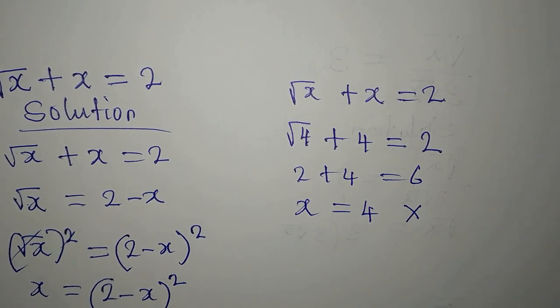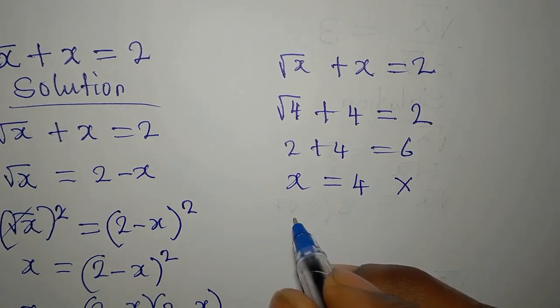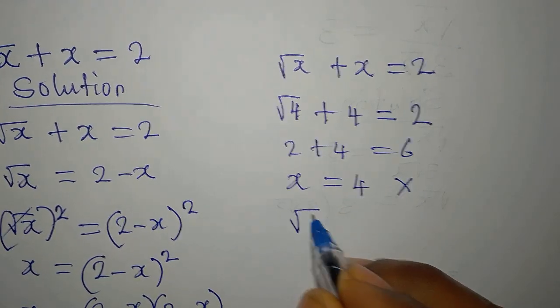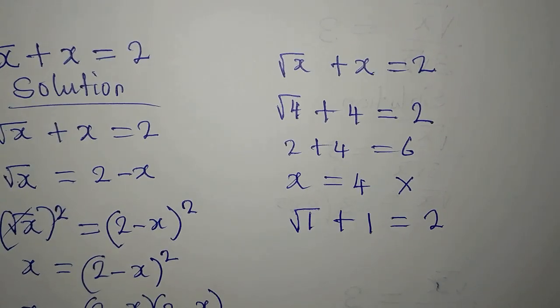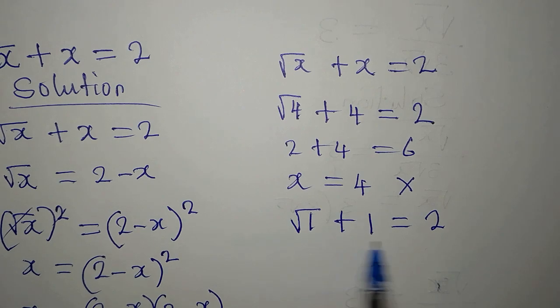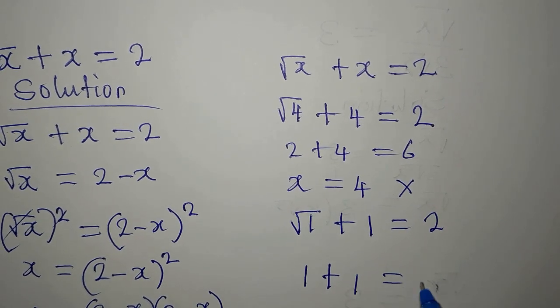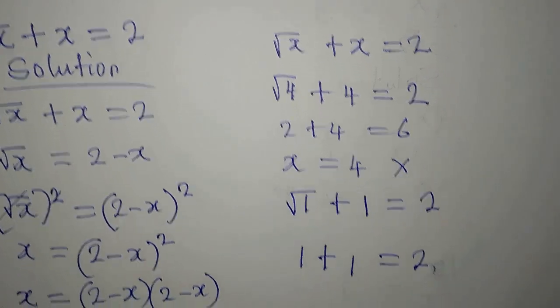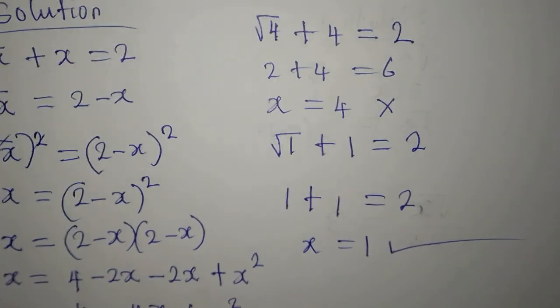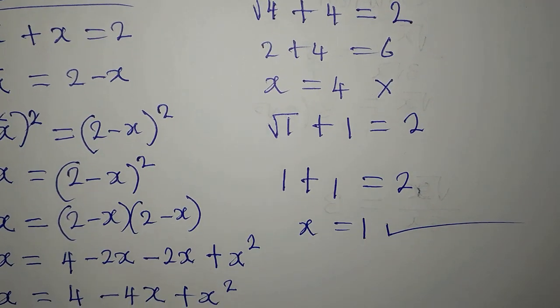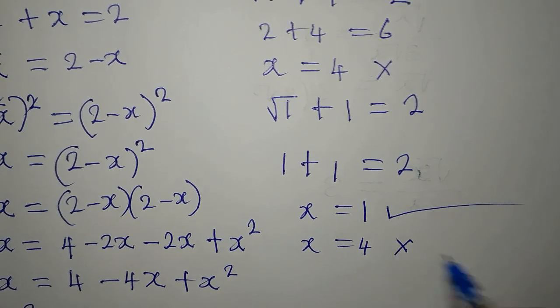Because it is not the solution. Now let's work with the next value, which is x equals 1. So that means we have square root of 1 plus 1. Will this give us 2? The answer is yes, because it is already obvious. Square root of 1 is 1, plus 1, and that is giving us 2. So this means that x equals 1 satisfies the equation, and the first solution, which is x equals 4, does not satisfy.